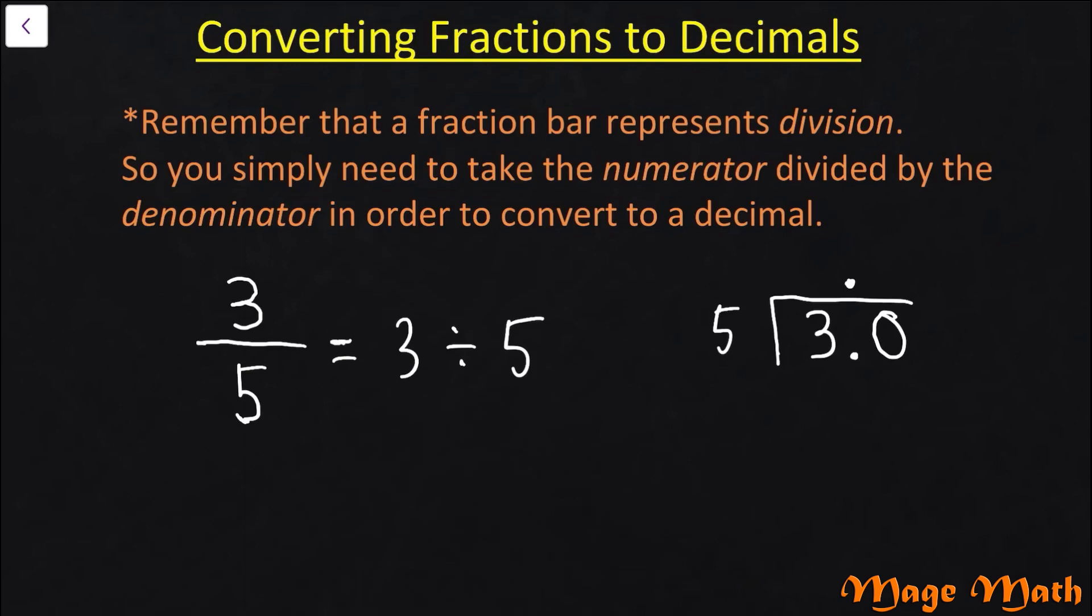But what that allows us to do now is instead of looking at this as a 3, we can look at this as a 30. Now we can ask ourselves how many groups of 5 can we pull out of 30? What is 30 divided by 5? Well we know that we can pull 6 groups of 5 out of 30. So we put a 6 up here. And since that comes out perfectly, we don't have anything left that we need to deal with, and so 0.6 is a decimal version of the fraction three-fifths. Three-fifths converts to 0.6.